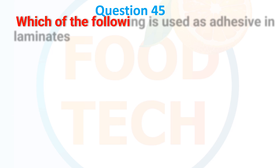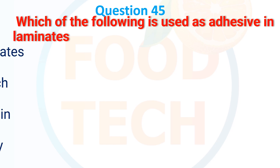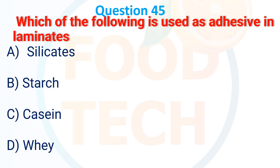Question 45. Which of the following is used as an adhesive in laminates? A. Silicates. B. Starch. C. Casein. D. Whey. The correct answer is C: casein.